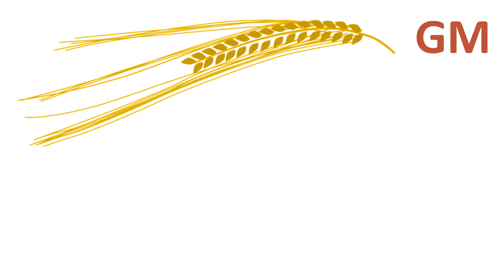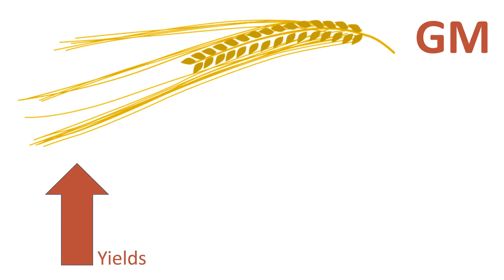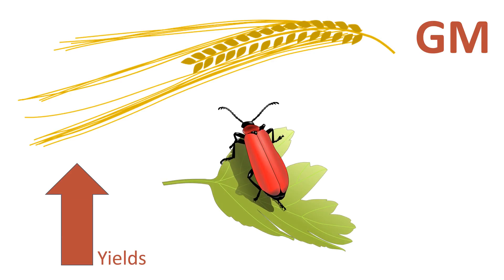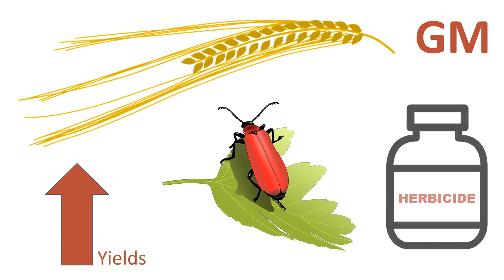Crops that have had their genes modified in this way are called genetically modified, or GM crops. GM crops generally show increased yields, and they include ones that are resistant to insect attack or to herbicides.